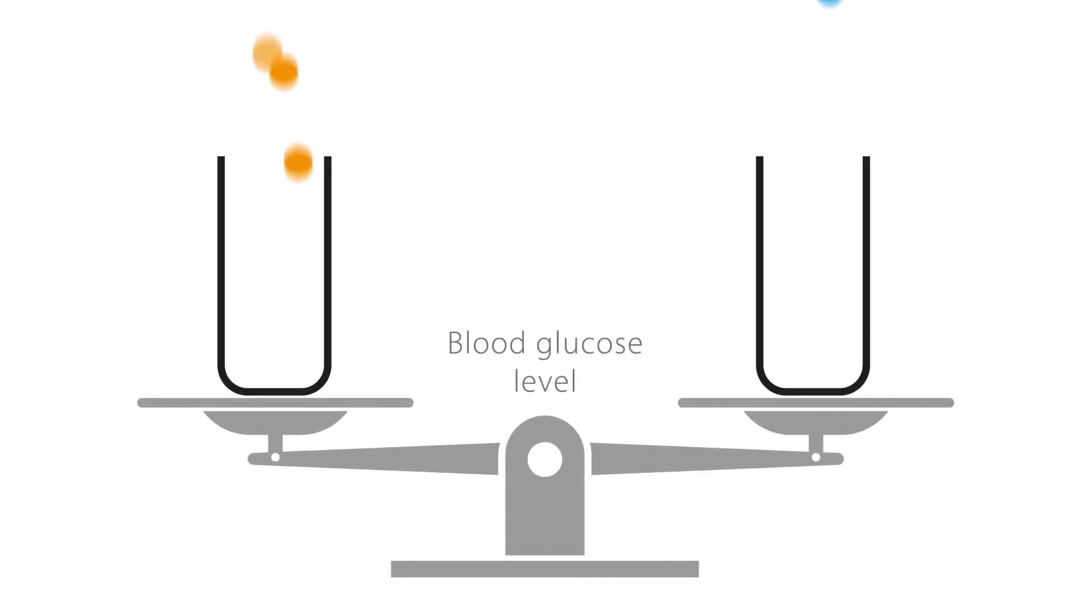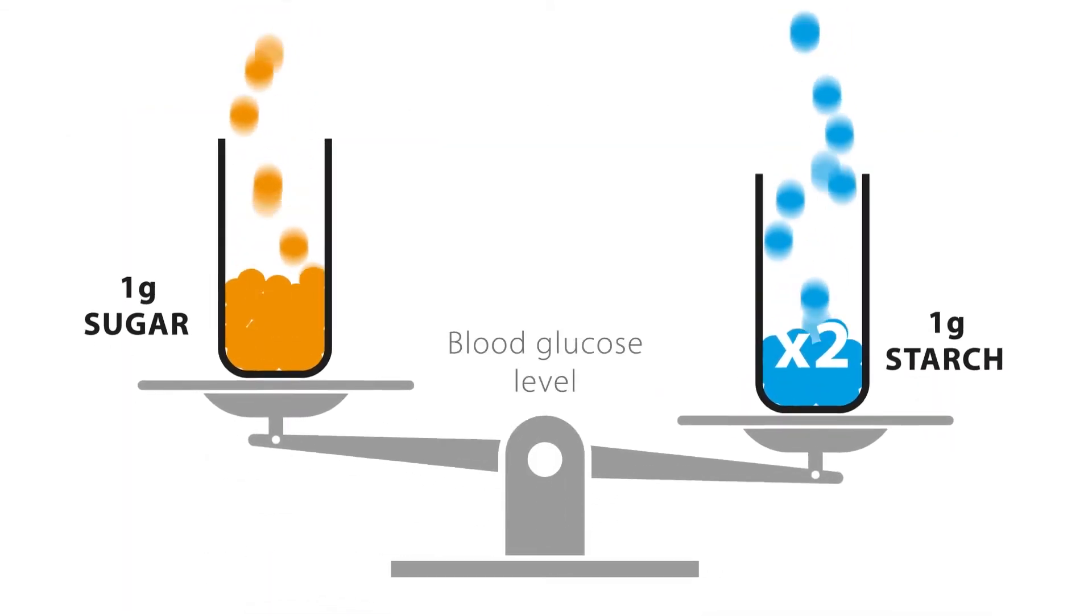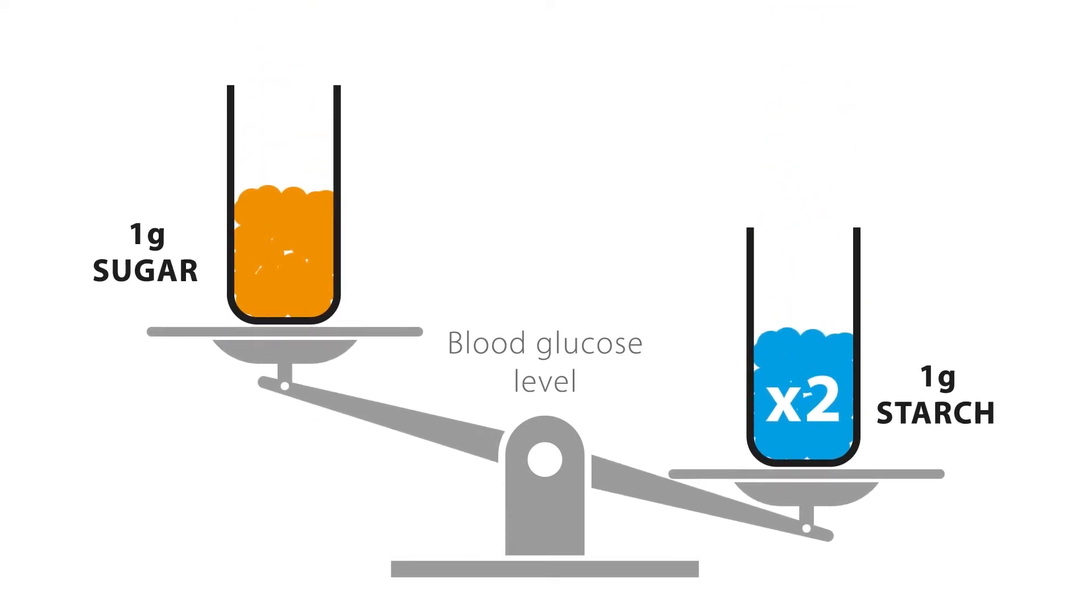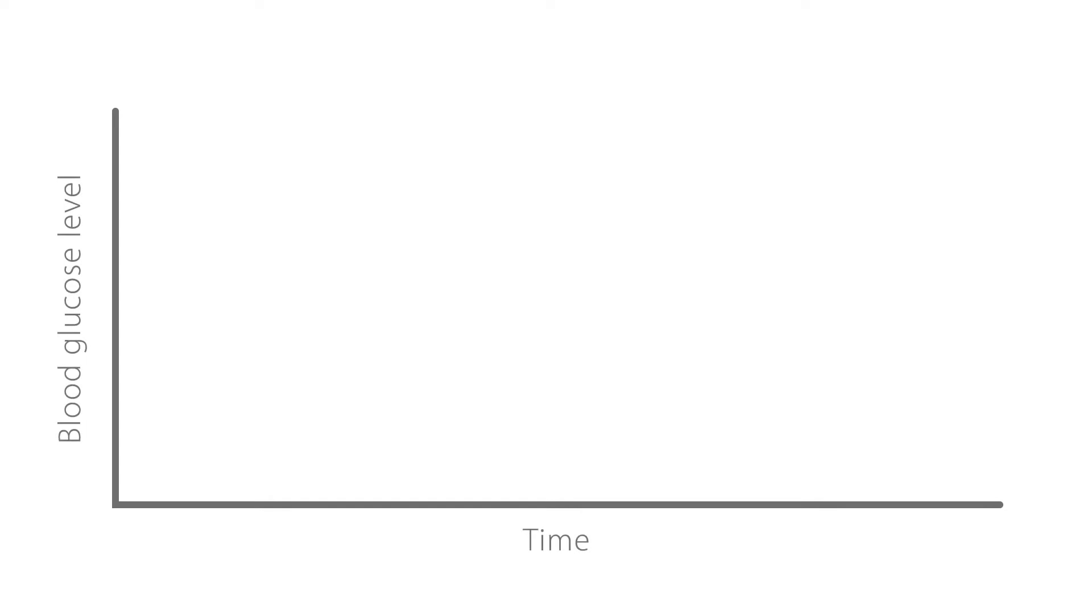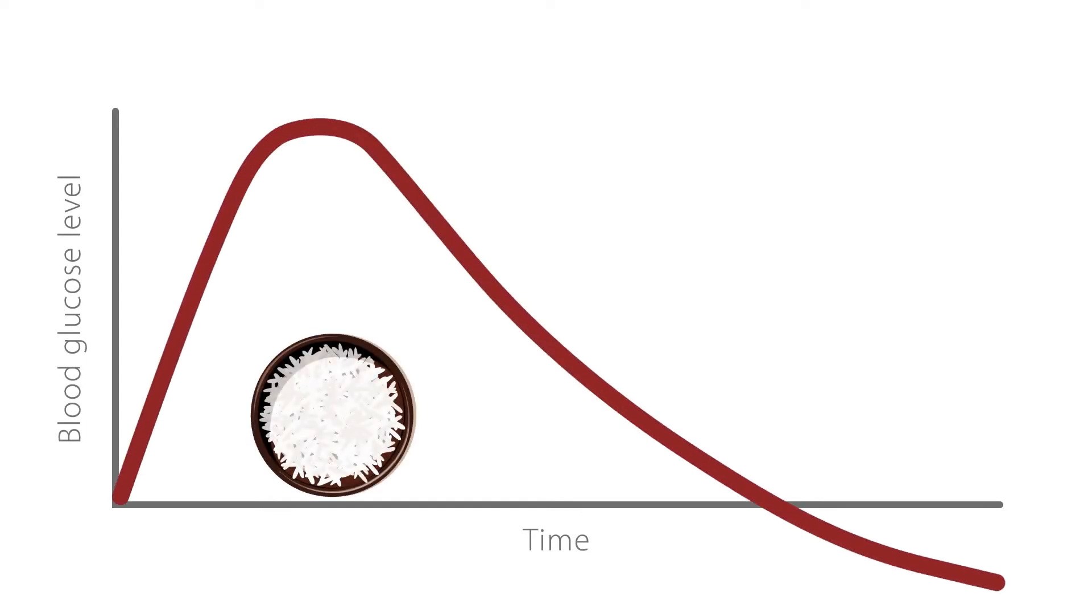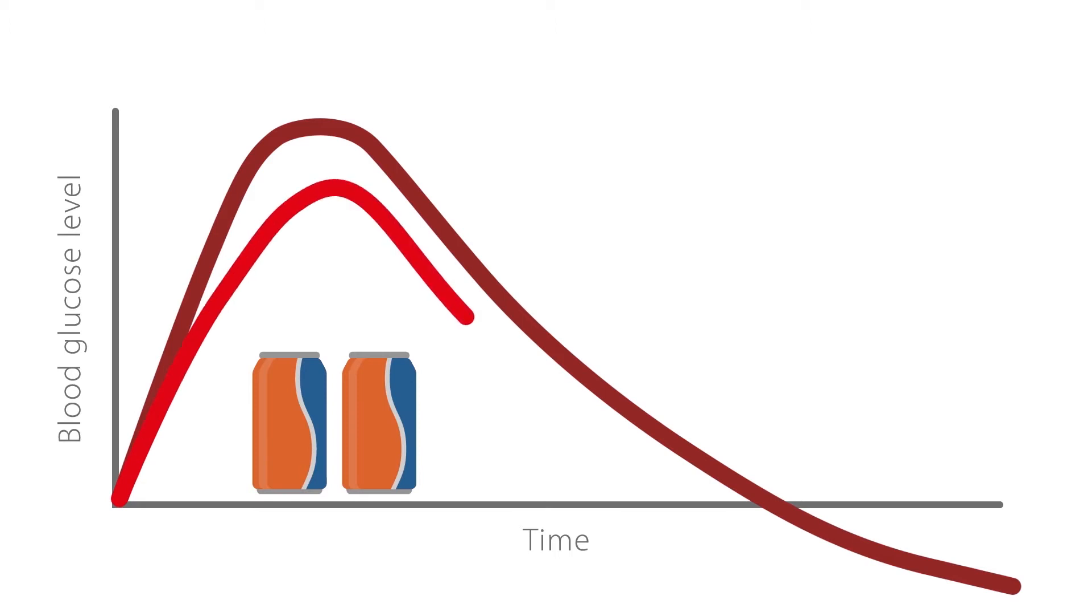Surprisingly, when comparing a gram of starch with a gram of sugar, starch has double the impact on our blood glucose levels. As an example, a 50-gram bowl of rice increases our blood glucose higher and faster than two cans of soft drink.